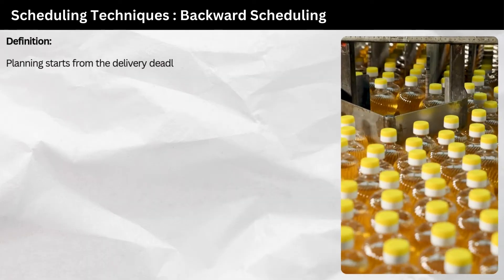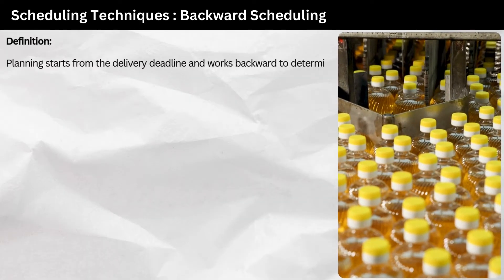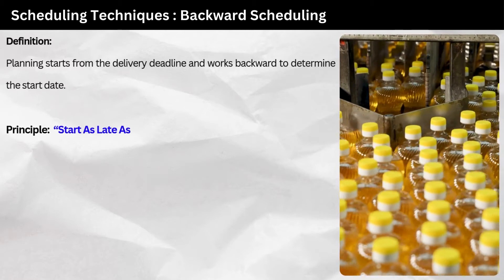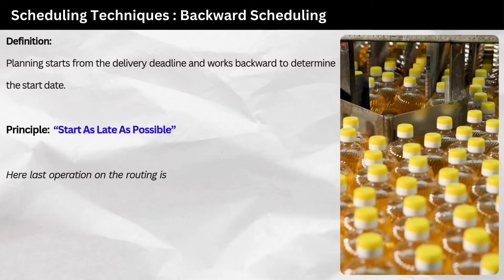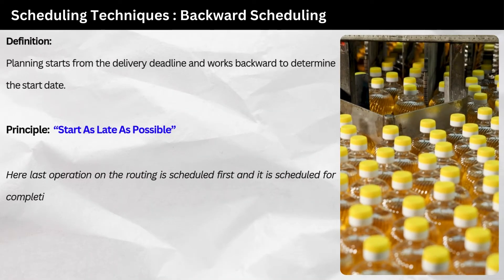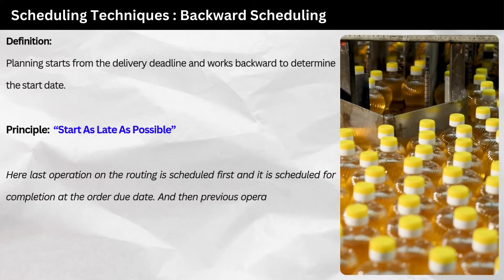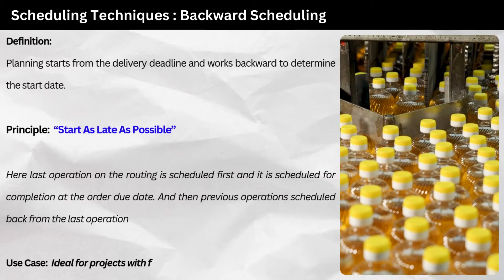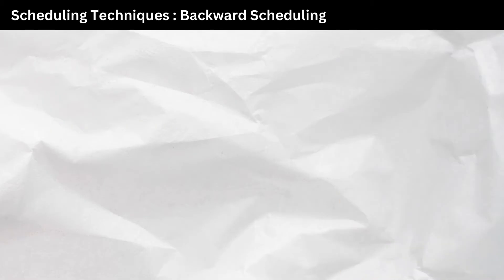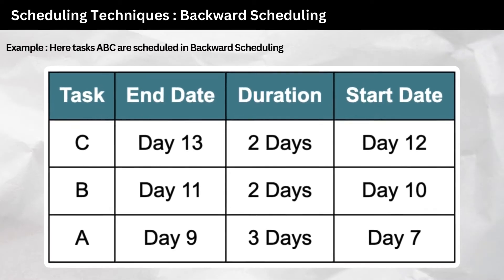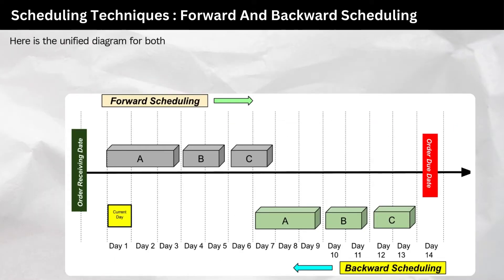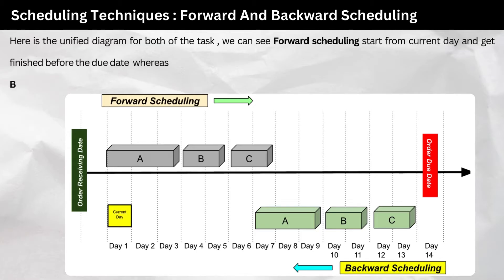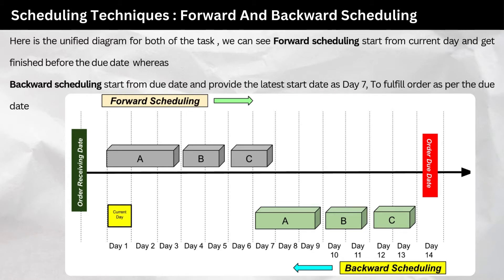Scheduling technique 2: Backward scheduling. Definition — planning starts from the delivery deadline and works backward to determine the start date. Principle — start as late as possible. The last operation on the routing is scheduled first, for completion at the order due date, and then previous operations are scheduled back from the last operation. Use case — ideal for projects with fixed delivery dates. In the unified diagram, forward scheduling starts from the current day and finishes before the due date, whereas backward scheduling starts from the due date and provides the latest start date as day 7.